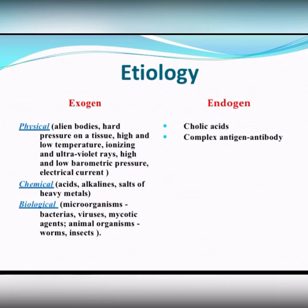All phlogogens, all etiological factors, we can divide into two groups: exogenous and endogenous. About exogenous, there are physical — like high pressure on tissue, high and low temperature, ionizing radiation, and many others — chemical, like acids, alkalines, salts of heavy metals, and biological — all kinds of microorganisms, bacteria, viruses, fungus, and others.